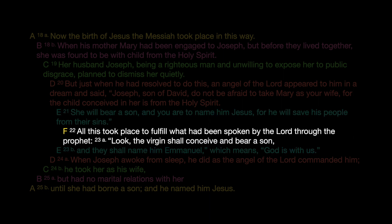And last, at the pivotal point of the chiasm, we have the heart of the message, and it's cued by the phrase 'all this' — which is referring to all the events in the structure as a whole — were to fulfill that which the Lord has spoken through the prophet, that the virgin would conceive and bear a son. Matthew chapter 1, verses 18 to 25.